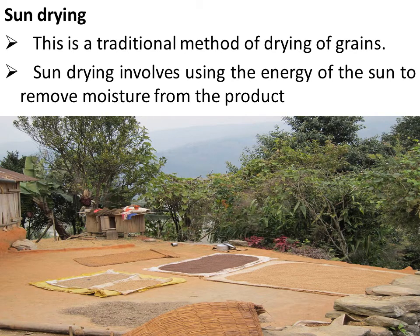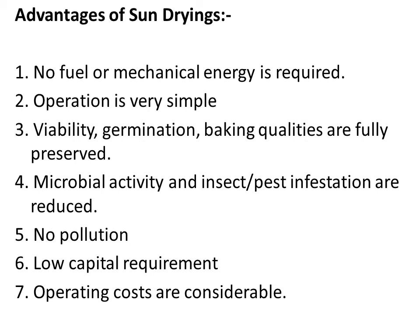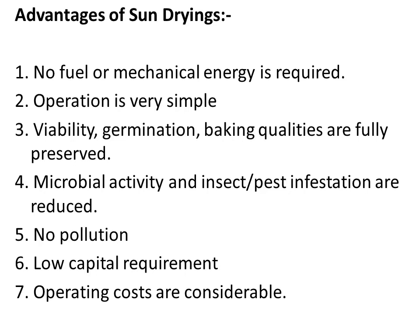Sun drying is a traditional method used in villages. It involves using the energy of the Sun to remove moisture from the product. Advantages include: no fuel or mechanical energy is required, operation is very simple, viability and germination and baking qualities are fully preserved, microbial activity and insect pest infestation are reduced, there is no pollution, and capital and operating costs are low.